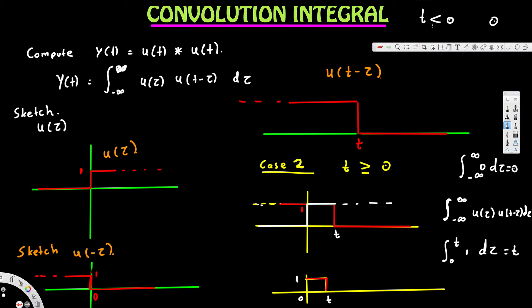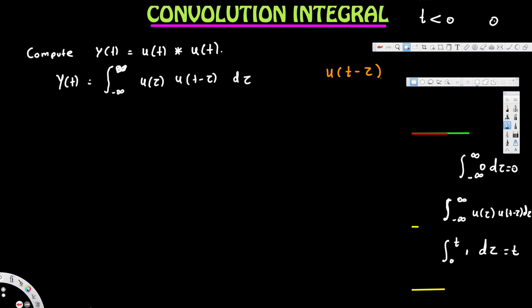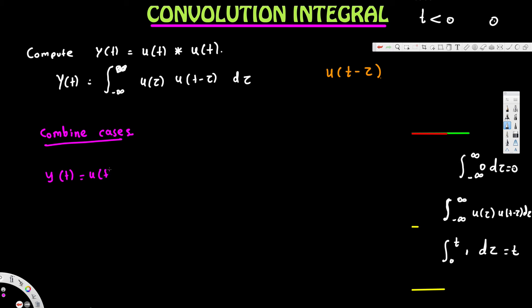Combining the two cases: when t is less than 0, y equals 0; when t is greater than or equal to 0, y equals t. So y(t) equals u(t) convolved with u(t) expressed as a piecewise function: 0 for t less than 0, and t for t greater than or equal to 0.